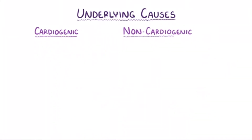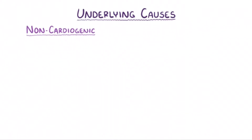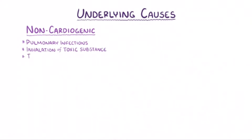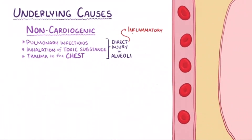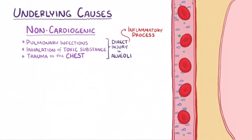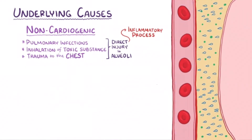Non-cardiogenic causes of pulmonary edema include things like pulmonary infections, inhalation of toxic substances, and trauma to the chest. All of these can cause direct injury to the alveoli, and when this happens there's usually an inflammatory process that makes nearby capillaries more permeable. As a result, proteins and fluid enter the interstitial space.